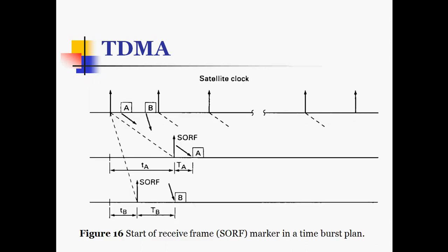In the diagram we can see the satellite clock with respective stations A and B, and the start of receive frame marker in a burst time plan. The start of receive marker for station A and for station B are shown, along with the frame intended for station B. The propagation delay for station B and T_A is the propagation delay for station A.